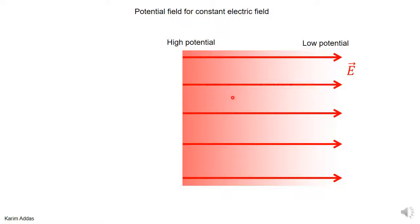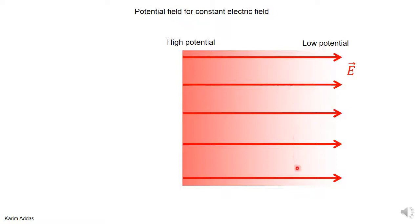We can illustrate the potential graphically with a gradient picture — the darker the color, the higher the potential. The electric field vectors go from the region of high potential to the region of low potential, and this is always what happens. It's a consequence of the minus sign in the relationship between electric field and potential. As you go perpendicular to the electric field, the potential stays the same; it only changes when you go along the field direction.